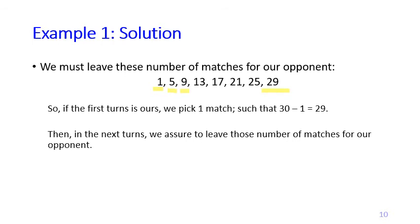Since we start with 30 matches and it's our turn first, on the first turn we pick one match to leave 29 for our opponent. Then we ensure we leave 25, 21, 17, 13, 9, 5, and finally 1 match for our opponent on each subsequent turn — and we will always become the winner. We haven't solved this using dynamic programming yet, but we can see the basic idea emerging.